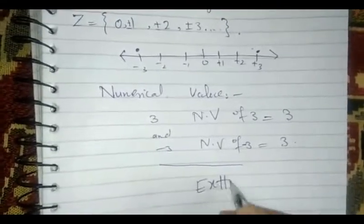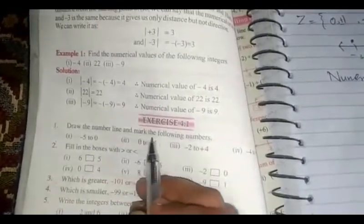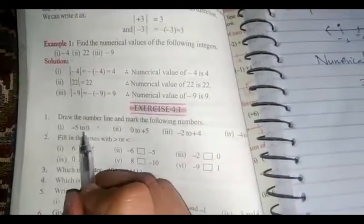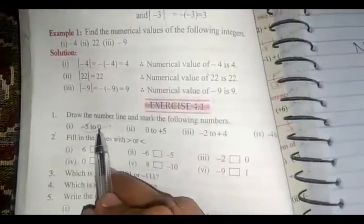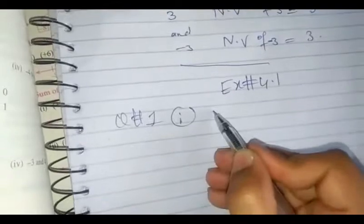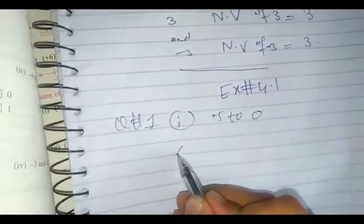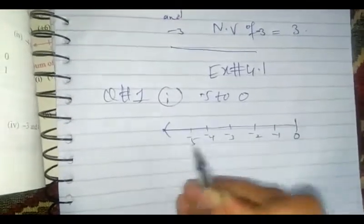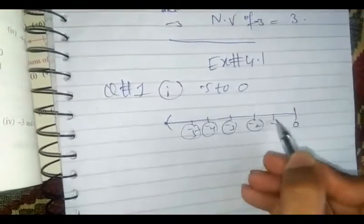Now we start exercise number 4.1. Question number 1: draw the number line and mark the following integers. We have to draw the number line and write integers from 0 to minus 5. For the first part, minus 5 to 0, we mark 0, minus 1, minus 2, minus 3, minus 4, and minus 5. Similarly, you have to complete question number 1 in full.